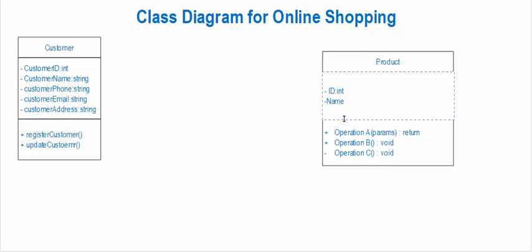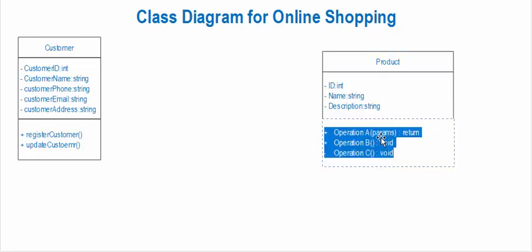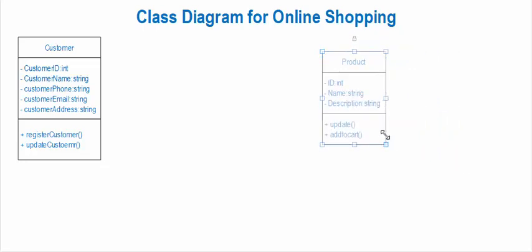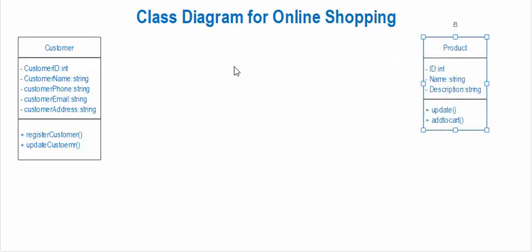Now let's create the product class. Attributes include product ID, product name (string), description (string). For functions we add: update and add to cart. That's the product class.